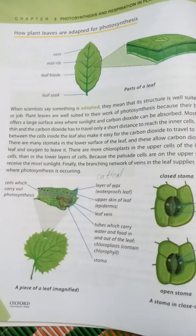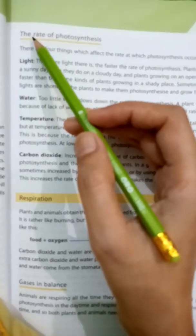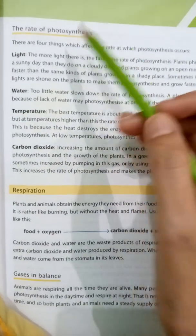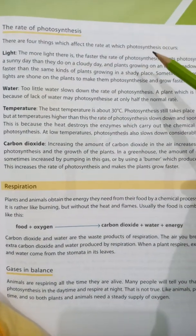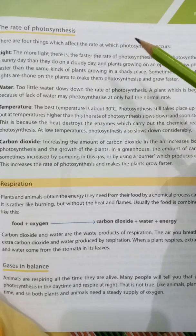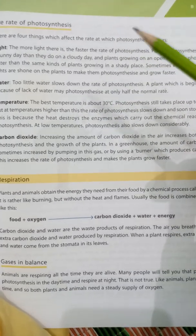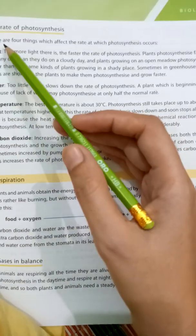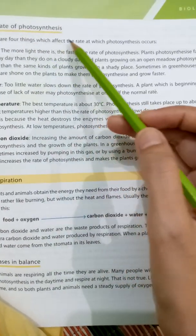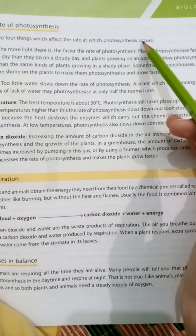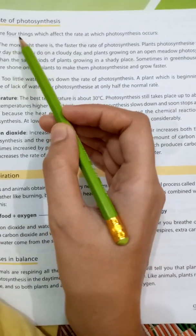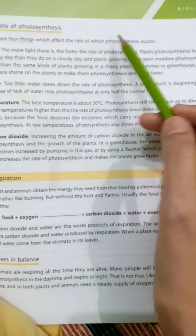Now we start from page number 27. The rate of photosynthesis — meaning photosynthesis ka jo rate hai — that procedure's time can increase or decrease due to certain factors. There are four things which affect the rate at which photosynthesis occurs. Four factors affect photosynthesis.